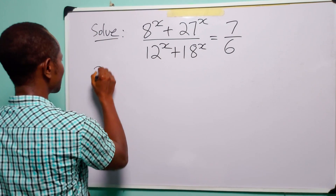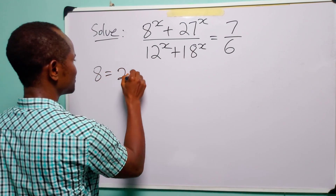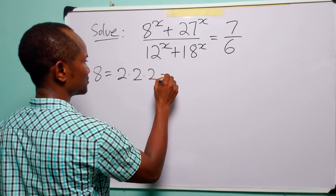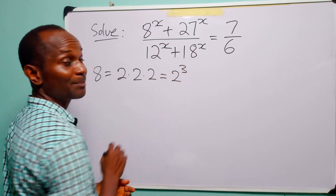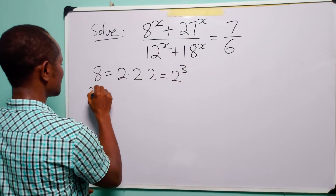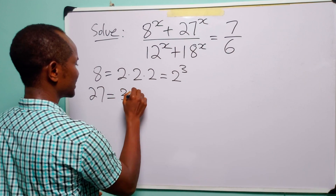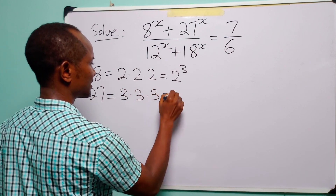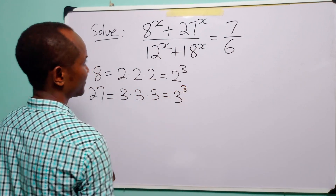Now we know that 8 is equal to 2 times 2 times 2, that is 2 to the power of 3. 27 is equal to 3 times 3 times 3, that is 3 to the power of 3.